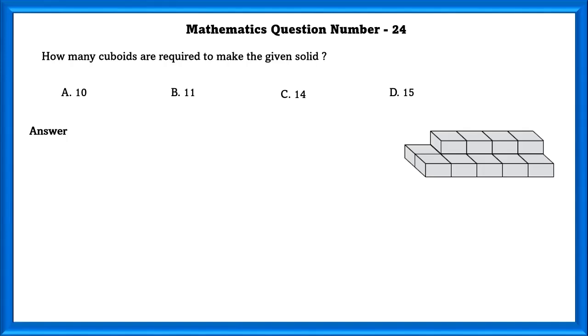Mathematics question number 24. How many cuboids are required to make the given figures? On the first layer, there are 4 cuboids. And on the second layer, the first one, there are 5 cuboids. And on the second one, there are also 5 cuboids. So the total cuboids needed to make this figure is equal to 14.